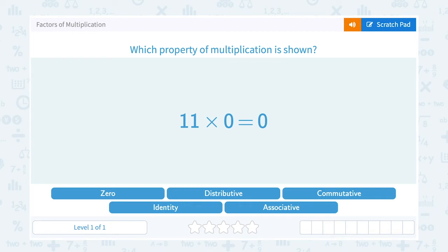Let's take a look at factors of multiplication. Which property of multiplication is shown? 11 times 0 equals 0.